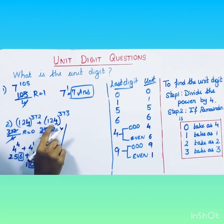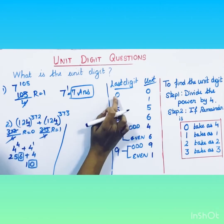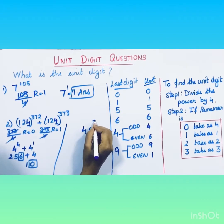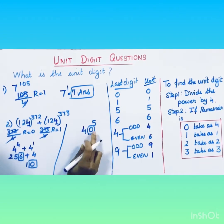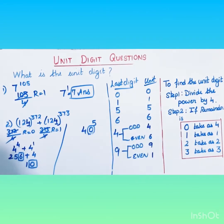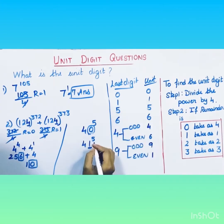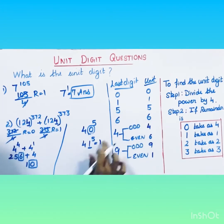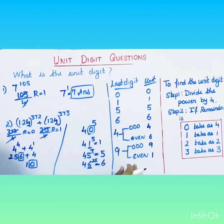There is an alternate way using this table. If the last digit of the base is zero, the unit digit is always zero. If the last digit is one, the unit digit is always one. If the last digit is five, any power gives unit digit five. If the last digit is six, any power gives unit digit six. Remember this table.